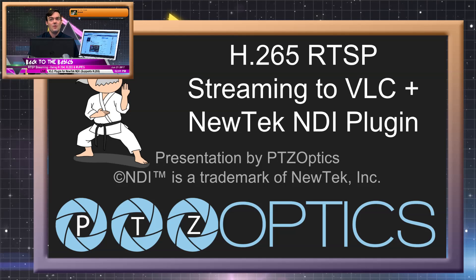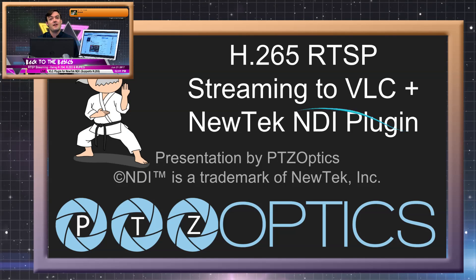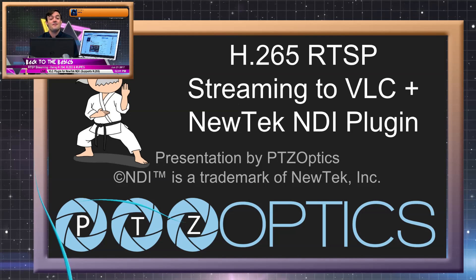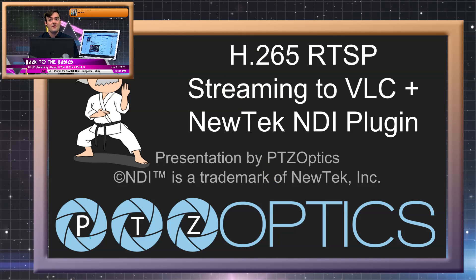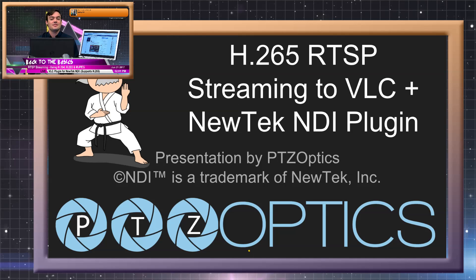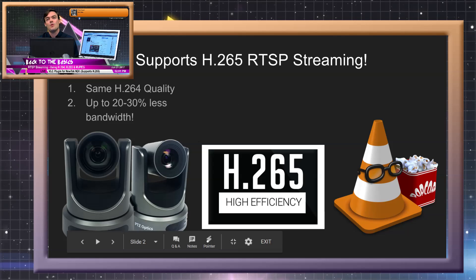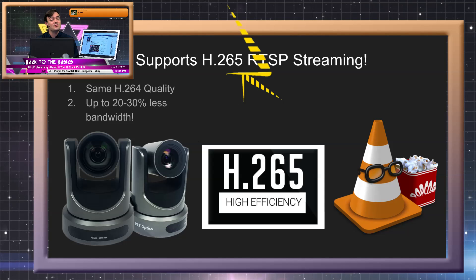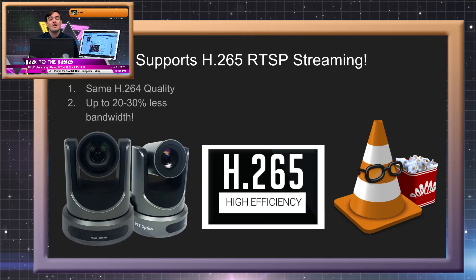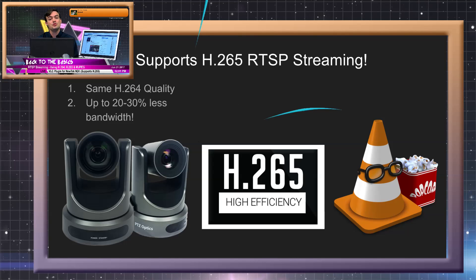Let's look at the different ways. We're going to look at streaming to VLC, which is a very special plugin that supports H.265 now — the most advanced compression algorithm available today, which PTZOptics supports. PTZOptics supports H.265; it's the same quality roughly as H.264, but you're going to see 20% to 30% less bandwidth used in your network, which can be crucial for so many real-world applications.